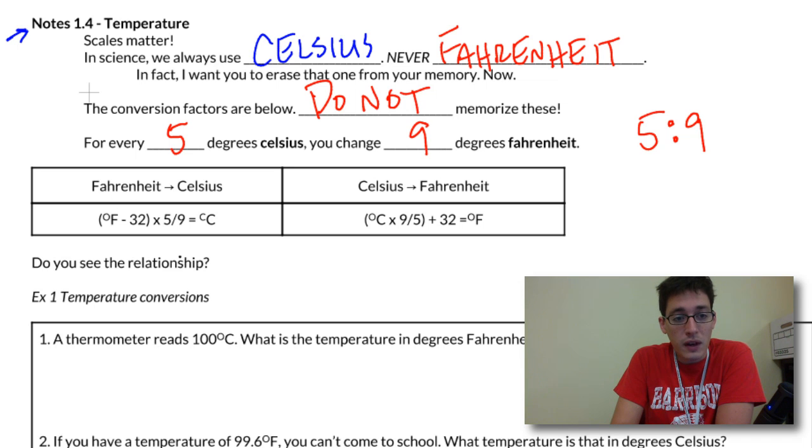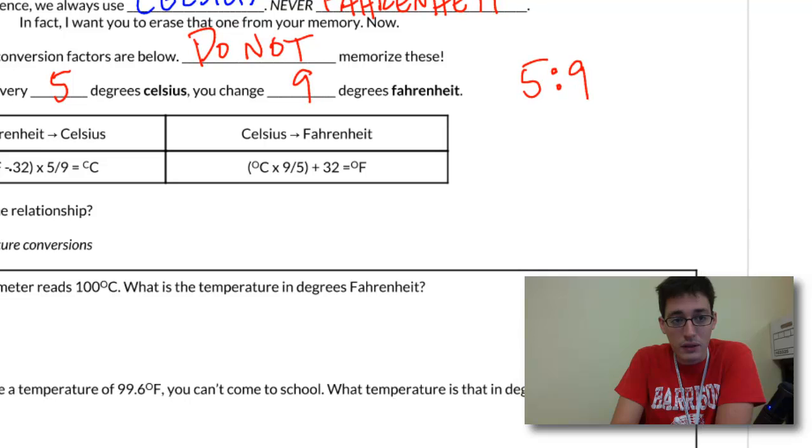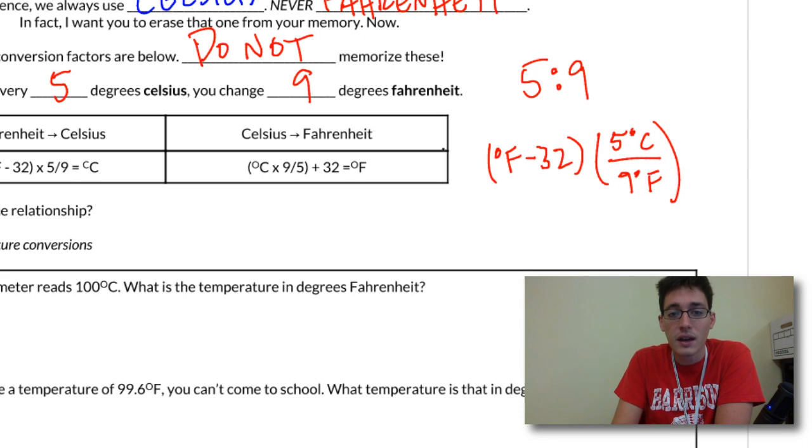This is what these conversion factors show us. Let's rewrite this conversion factor: we've got degrees Fahrenheit minus 32, and then that's multiplied by a conversion factor. We've got five degrees Celsius over nine degrees Fahrenheit. If you remember from our conversion practice, if we've got a Fahrenheit unit in the numerator and a Fahrenheit in the denominator, these are going to cancel each other out. That means Celsius is left over as our answer.